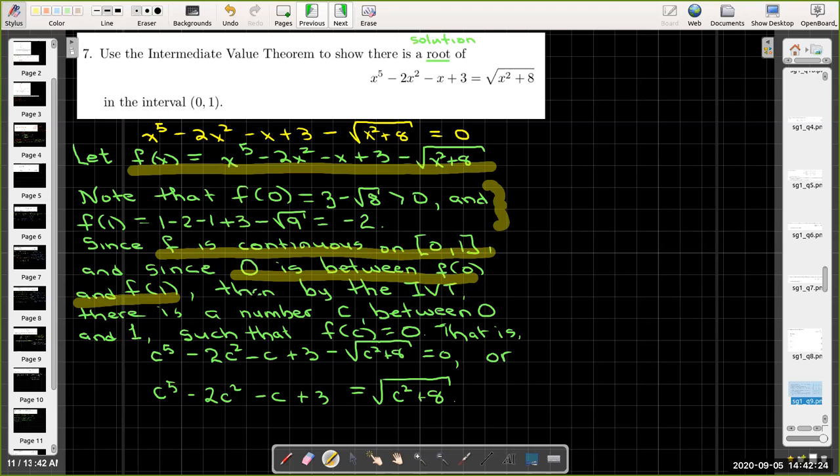We need to conclude that by the IVT there's a number c between 0 and 1 such that f(c) equals 0. And then we would like to answer the original question which had to do with an equation, not with a function.